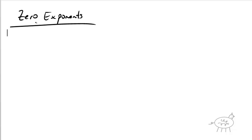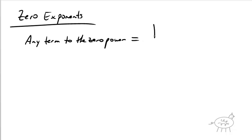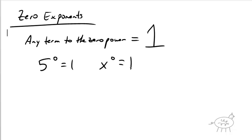Okay, so let's first talk about zero exponents. Basically, any term to the zero power equals one. That's it — any term to the zero power is one. So if I give you 5 to the zero power, that's one. X to the zero power, that's one. Please don't say it's equal to zero. This is a common mistake — kids say five to the zero power is zero. It's not the case. It's equal to one. Really, really important.